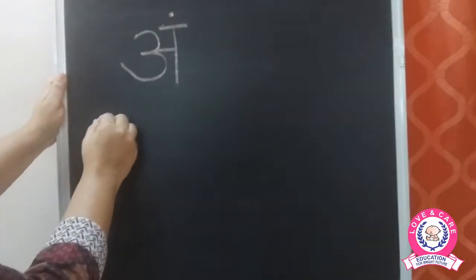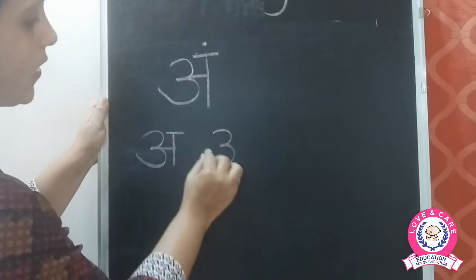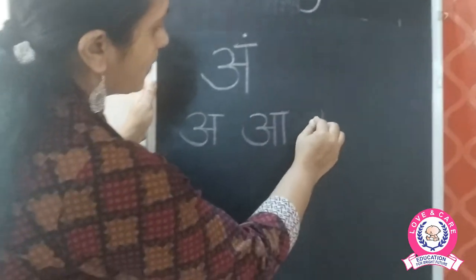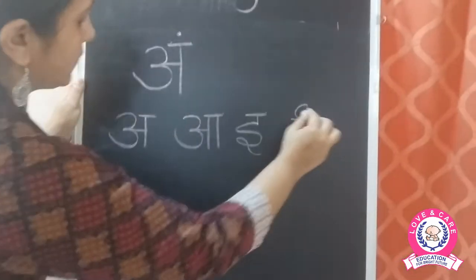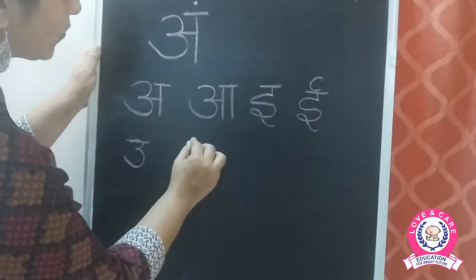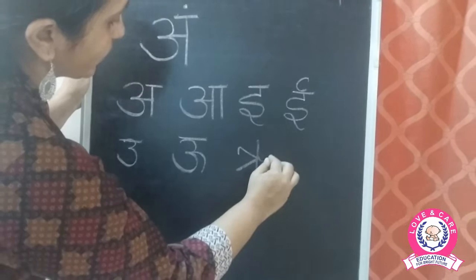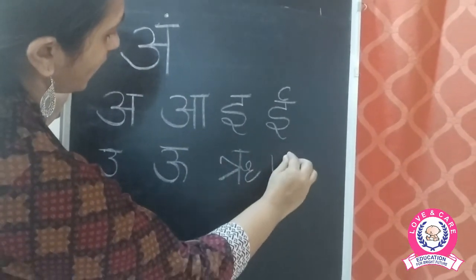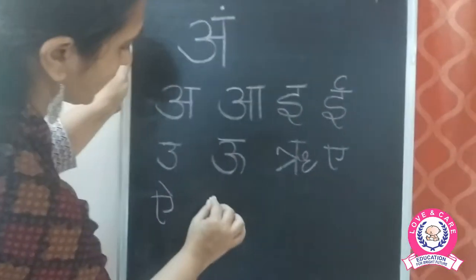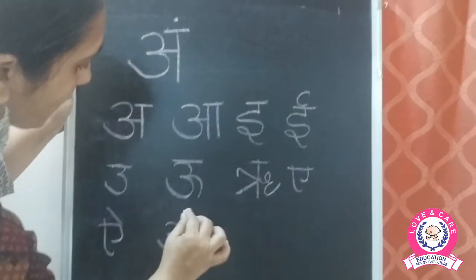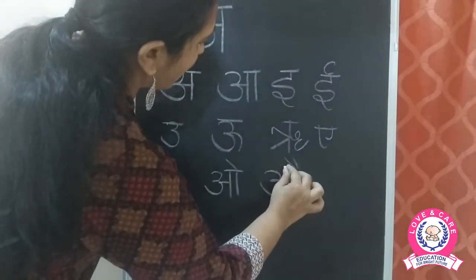Now we are going to do the revision of Hindi letters: A, AA, I, II, U, UU, R, E, AI, O, AU, and the anusvara.